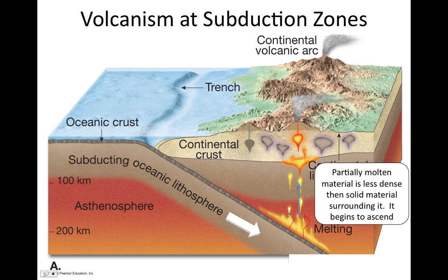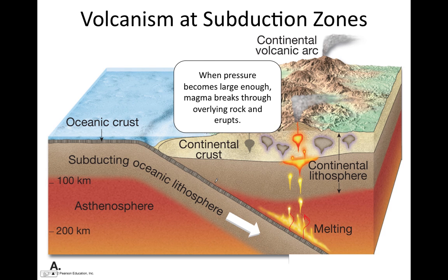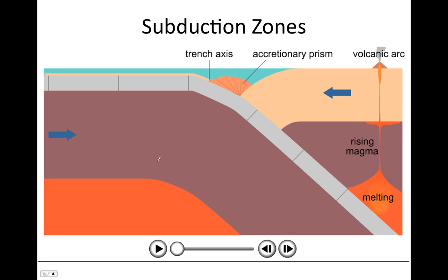The production of melt through this partial melting results in liquid rock that is less dense than the solid rock around it. That liquid rock begins to ascend towards the surface, where it eventually ponds and forms magma chambers. Pressure builds in these magma chambers until it's significant enough to break through the overlying rock and result in a volcanic eruption. So volcanism occurs along subduction zones because water is being transported down into the mantle by the subducting oceanic lithosphere.